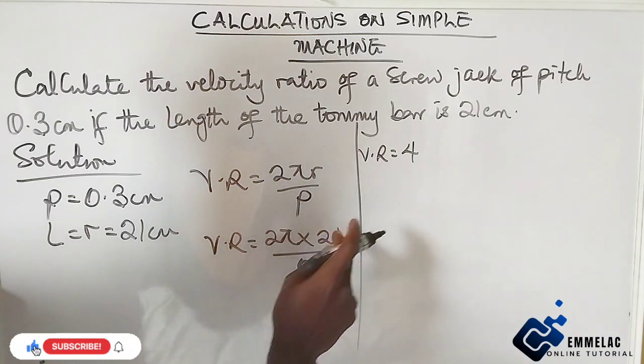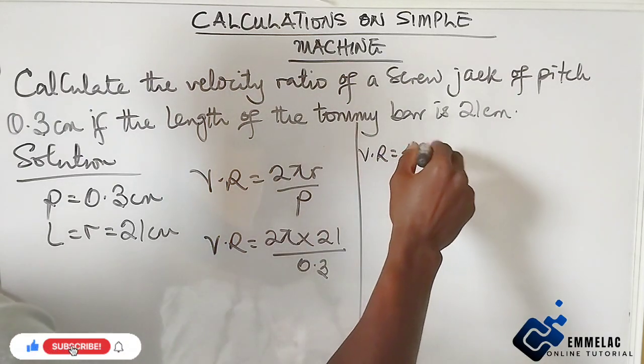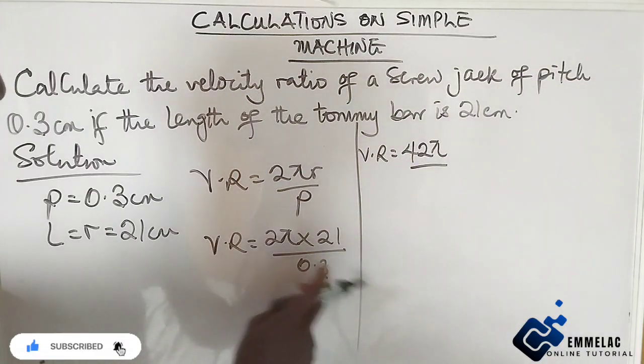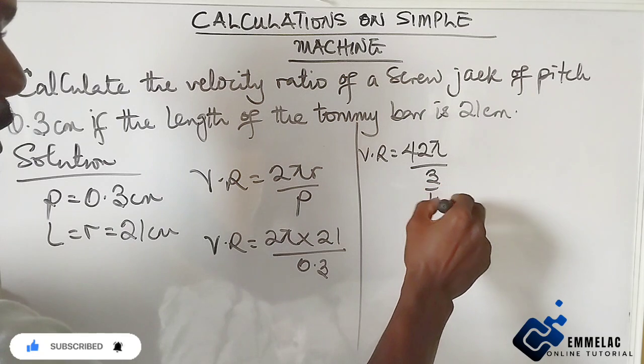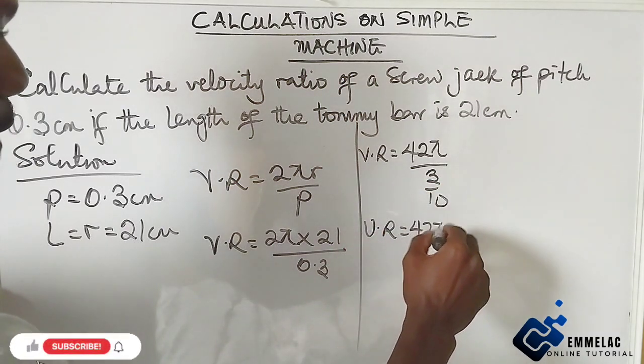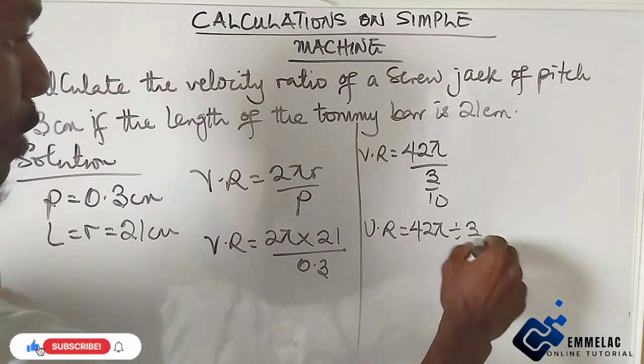2 times 21 will be 42π. Now changing this to a fraction we have 3 over 10, so this will now be 42π divided by 3 over 10.